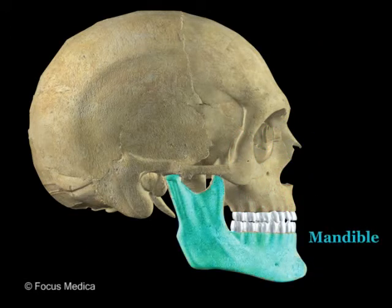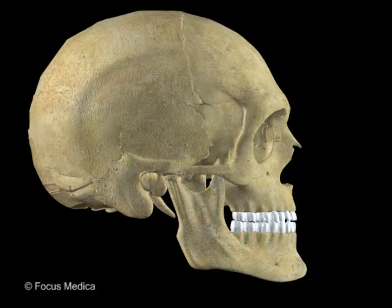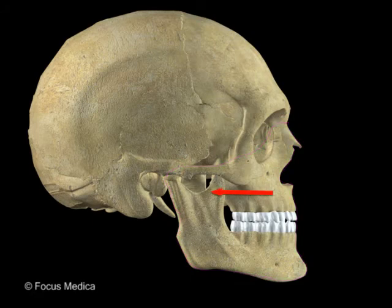The lateral view of the mandible is also seen along with the temporomandibular joint. Details of the posterior part of the facial skeleton, like the infratemporal fossa, become more clear in this view.